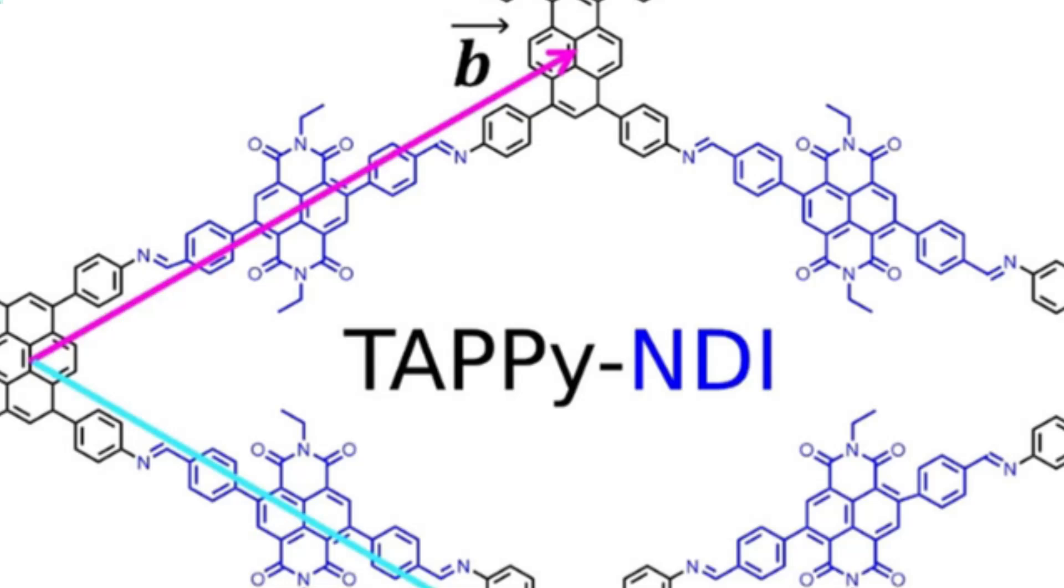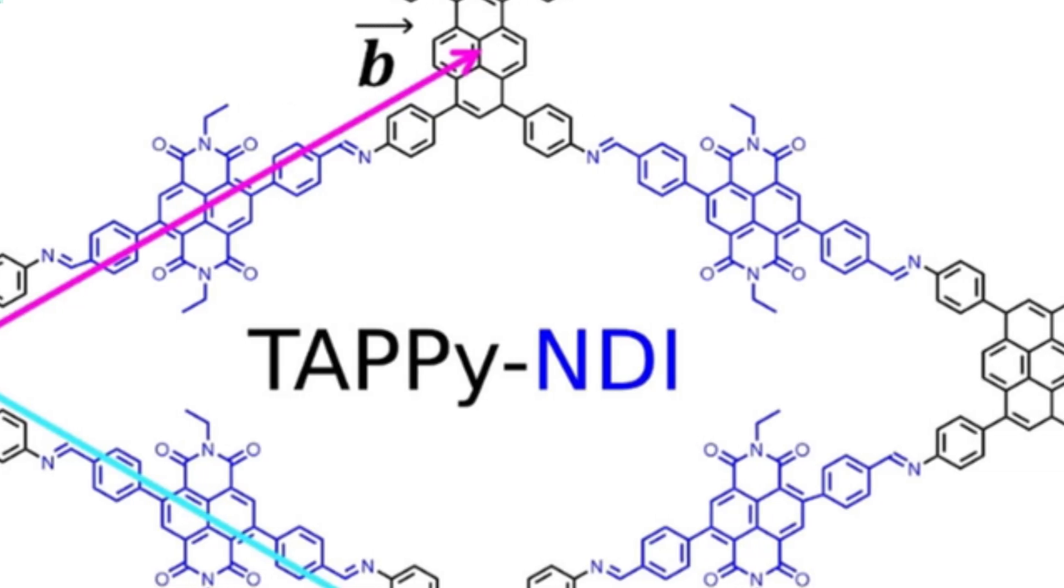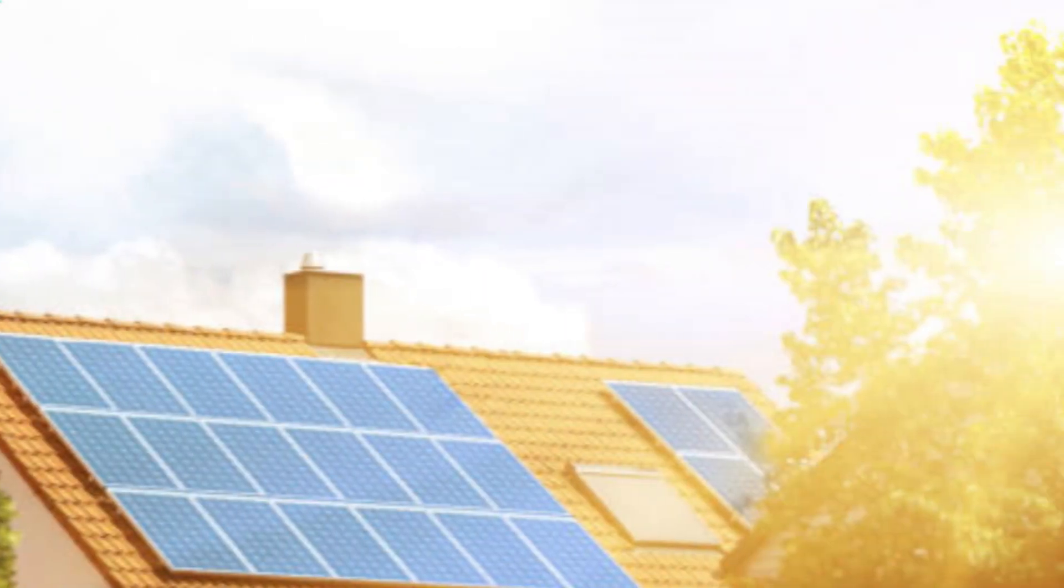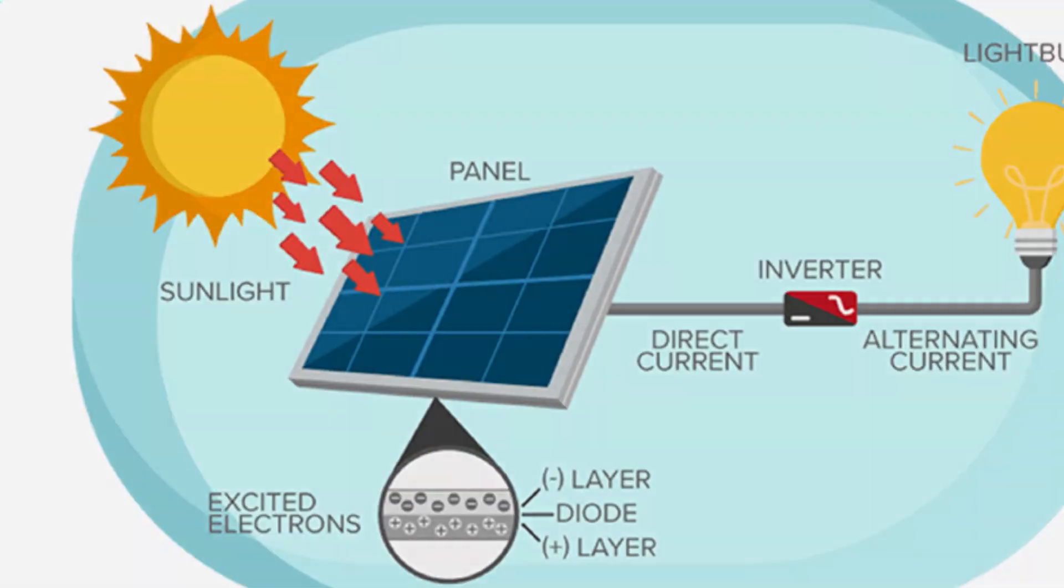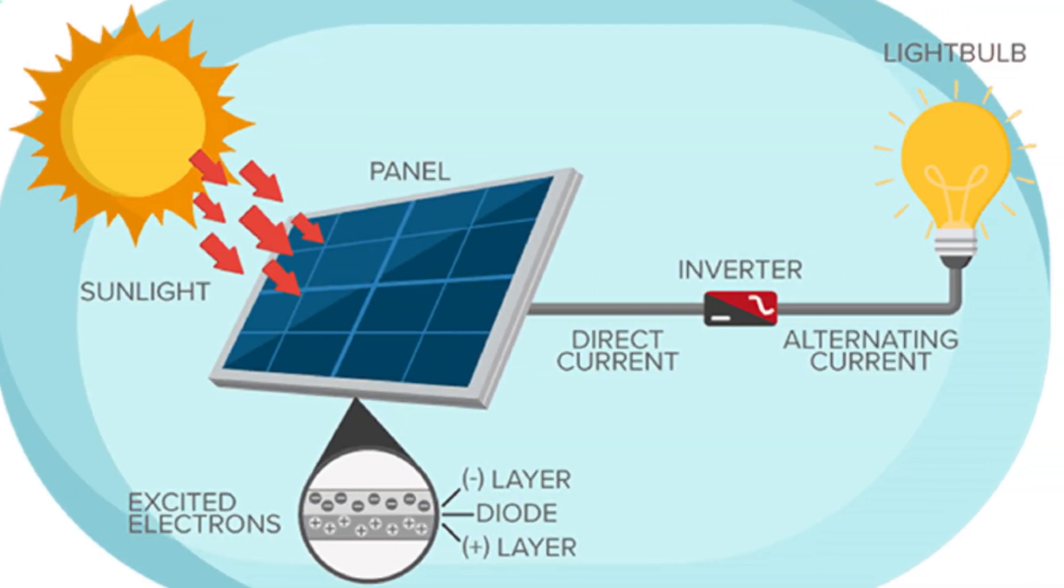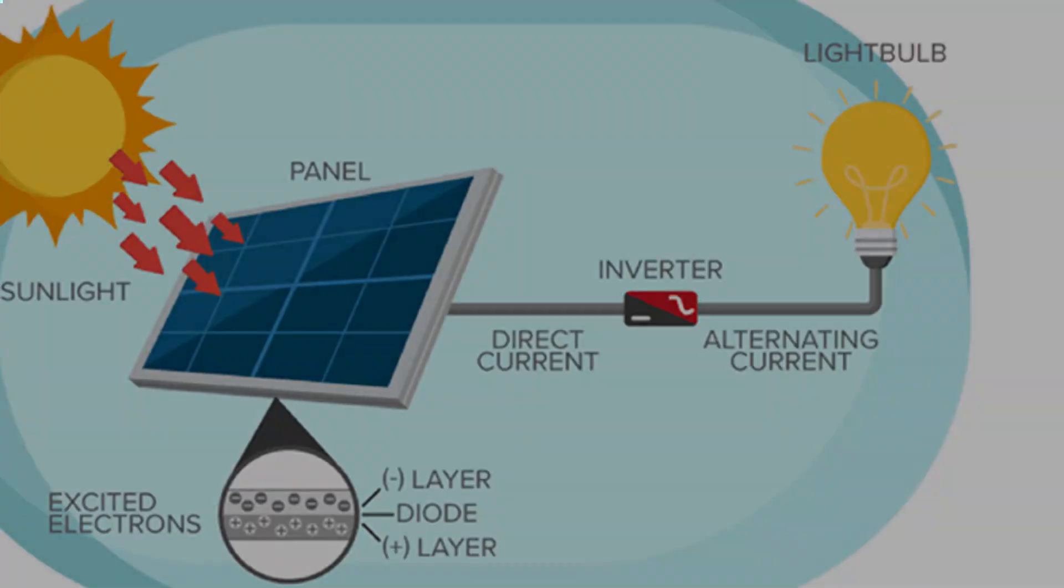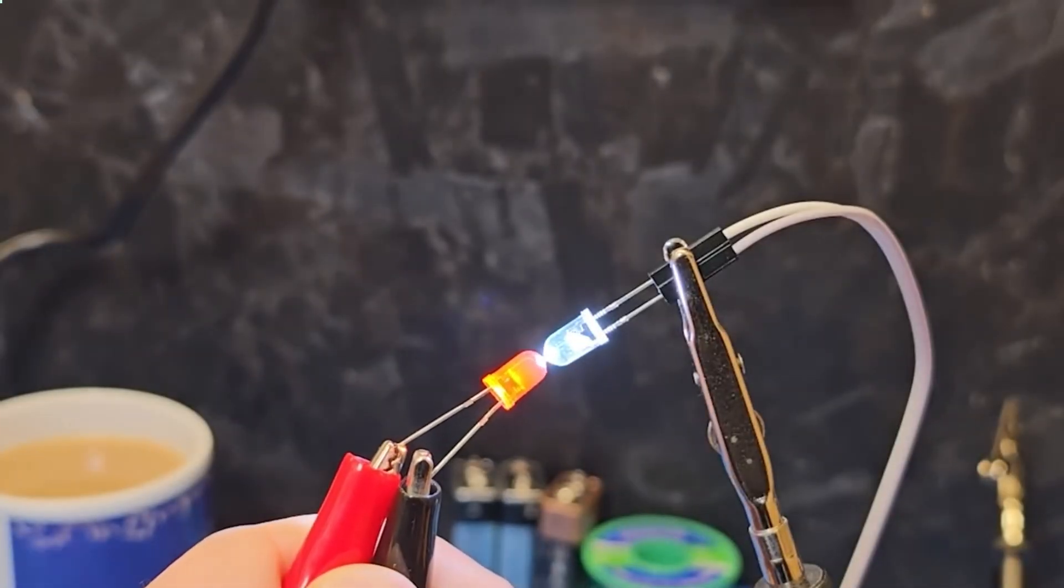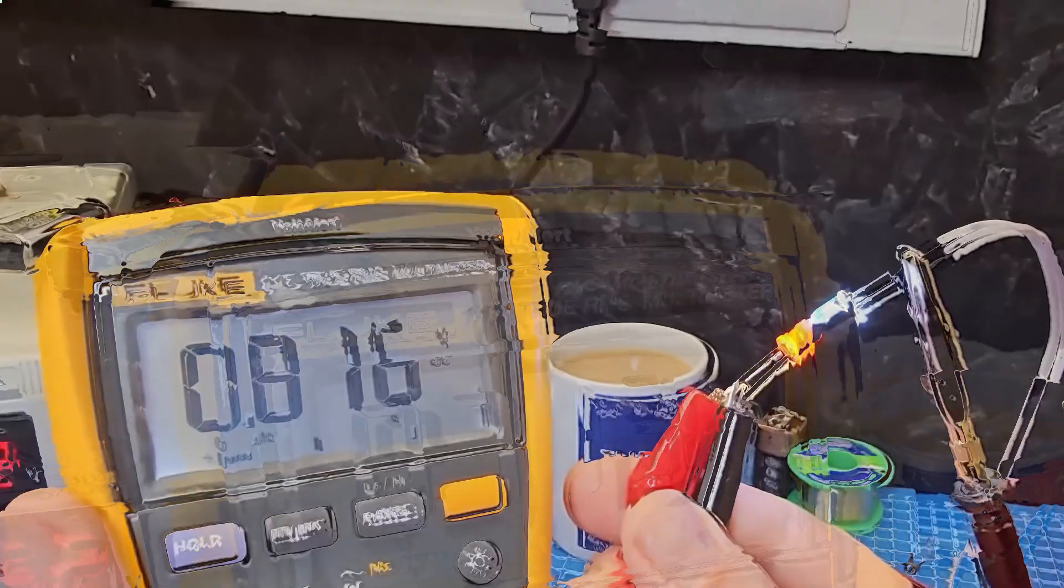But in NDICOF, things happen a little differently. Yes, it still absorbs sunlight, but instead of sending those electrons straight into an external circuit, it traps them inside the material itself, like a built-in energy bank. And here's where it gets even more clever.